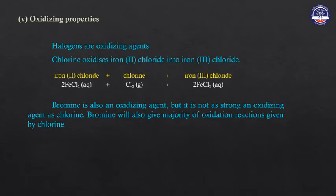Oxidizing properties: halogens act as oxidizing agents. Chlorine acts as a 2Cl2 oxidizing agent. FeCl2 contains Fe2+; FeCl3 contains Fe3+. Chlorine oxidizes Fe2+ to Fe3+ — FeCl2 is oxidized by Cl2 to give FeCl3. Bromine also shows similar oxidizing behavior.